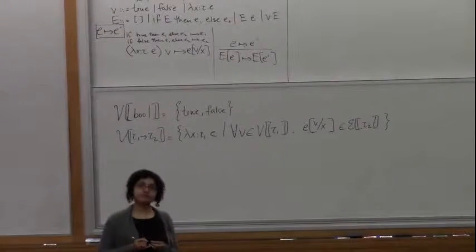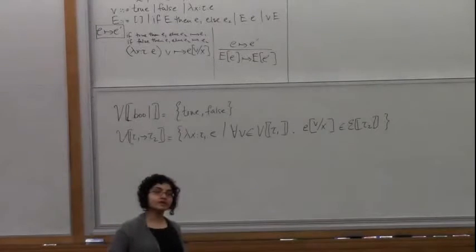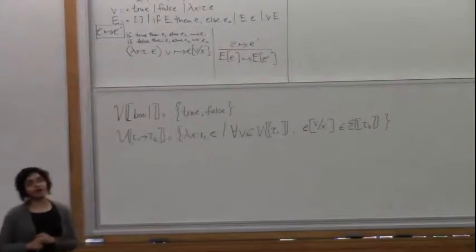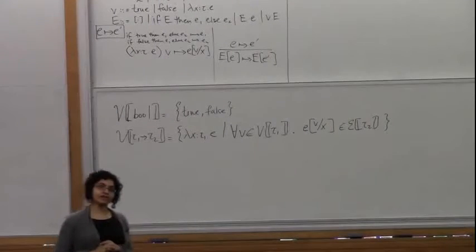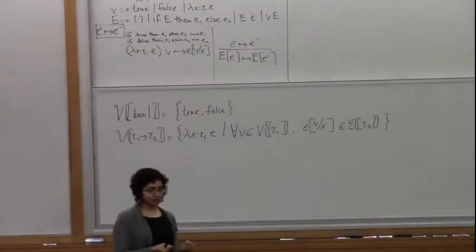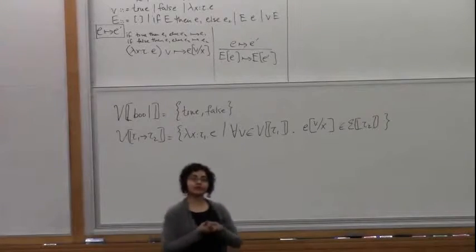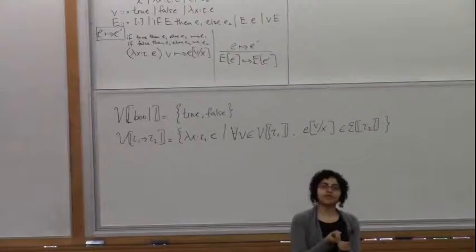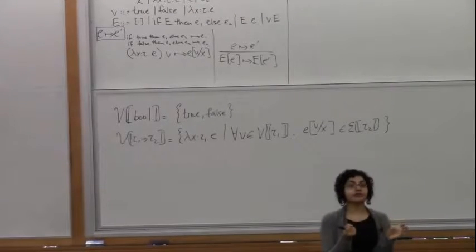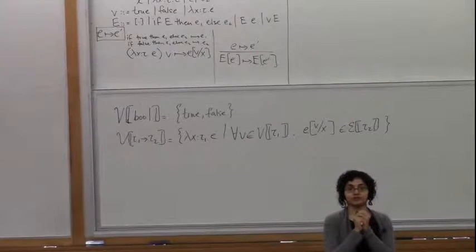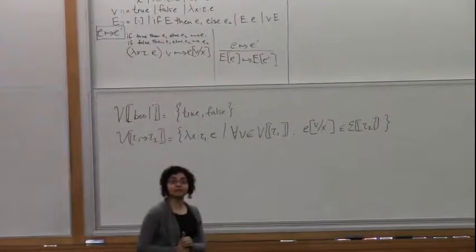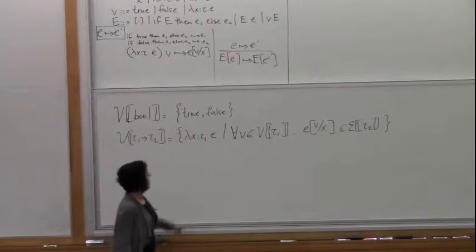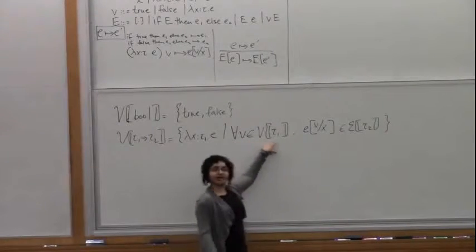So we say: if you give me some value v that behaves like an appropriate argument of type tau_1, then if I take that v and substitute it into the body of the lambda E — basically after beta reduction — this expression will behave like an expression of type tau_2. This is because we are in a call-by-value setting. When you have a lambda, at some point you will be applying it to a value — you will have already reduced your argument to a value. If we were doing call-by-name, I would put 'for all E in E[tau_1]' instead.